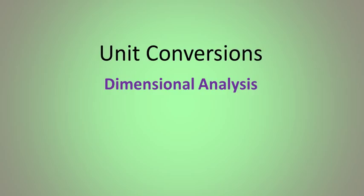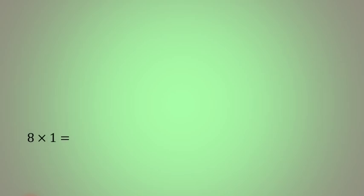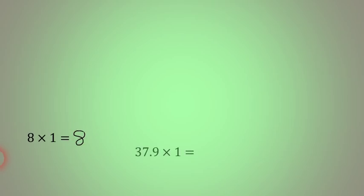Let's say that we have this math problem here — a very simple math problem: 8 times 1. I hope everyone knows that the answer to that is 8, because any number multiplied by 1 is equal to itself. And so we can say the same thing about this: 37.9 times 1 is 37.9.